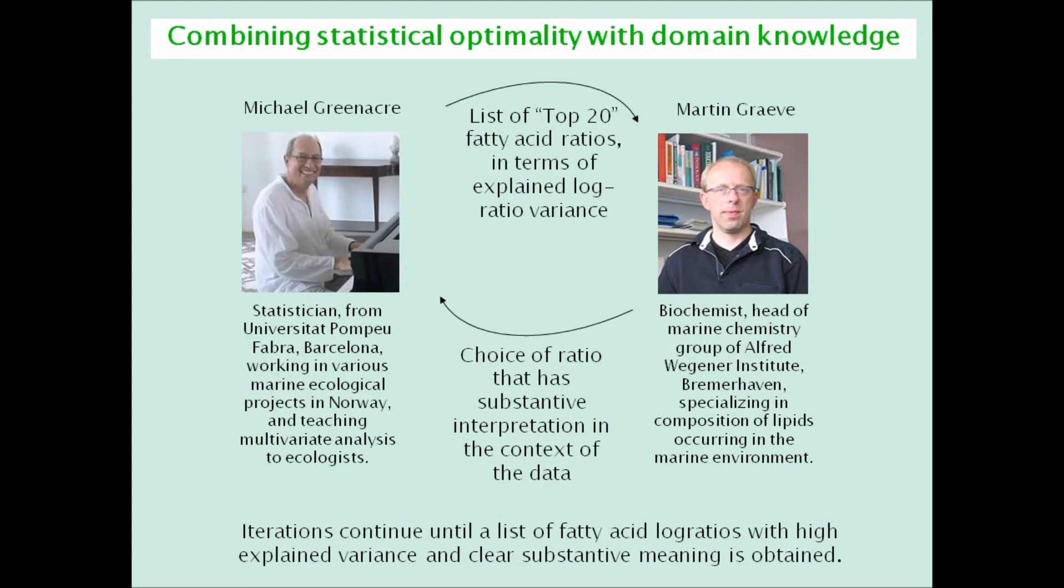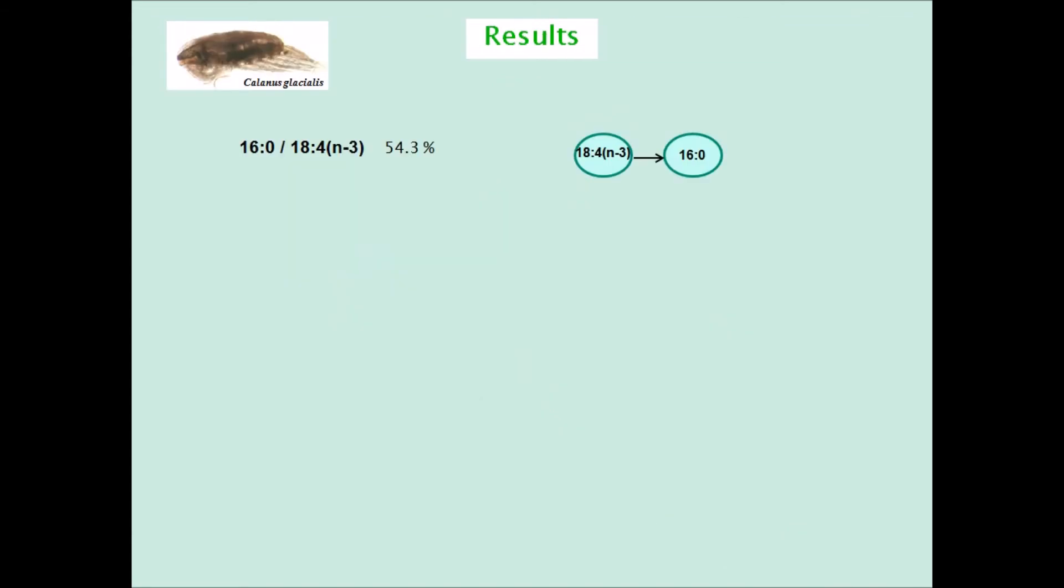So here are the results of the Copepod study, and the results will be represented by a network graph on the right. The first ratio chosen was 16.0 divided by 18.4 N-3, explaining already just by itself 54.3% of the total log ratio variance, clearly a very important ratio in the data set.